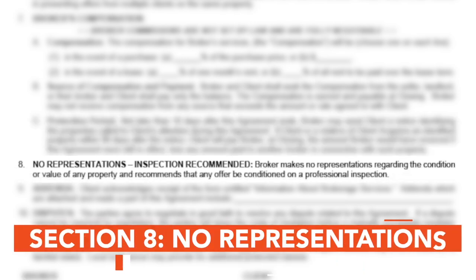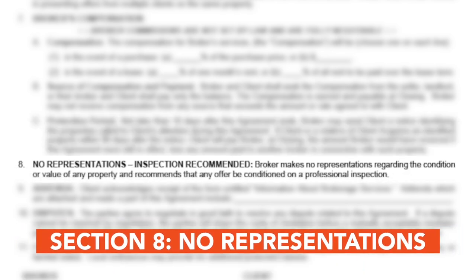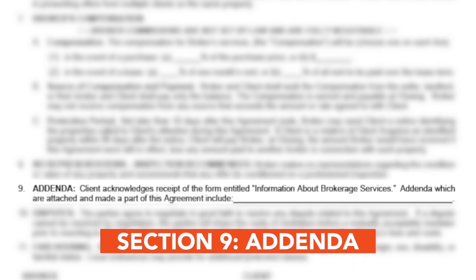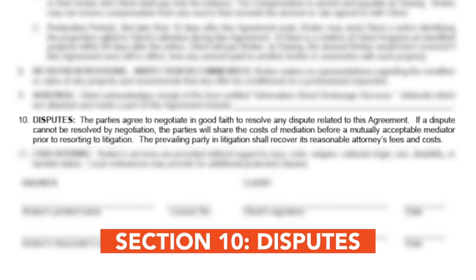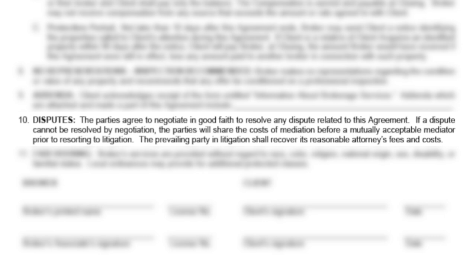The eighth section is no representations. This section notes that you aren't making representations about the property and you recommend an inspection by a professional. The ninth section is addenda. If you have an addendum to add, you should note it here and ensure it is attached. The tenth section is disputes. Review how disputes will be resolved — the path is negotiation to mediation to litigation.